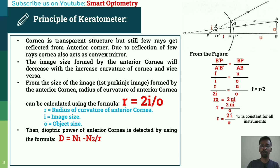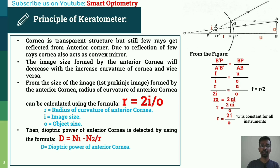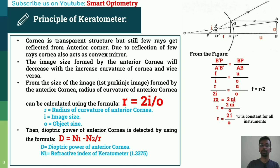The dioptric power of the anterior cornea is then calculated using the formula: D = (n1 - n2) / r, where D is the dioptric power of the anterior cornea, n1 is the refractive index of the keratometer, which is 1.3375, and n2 is the refractive index of air, which is 1.